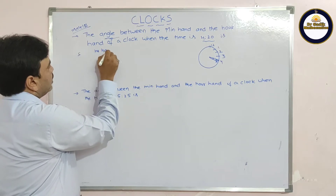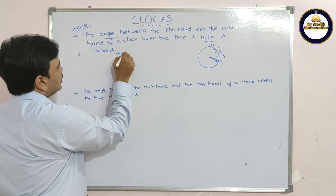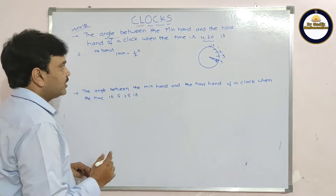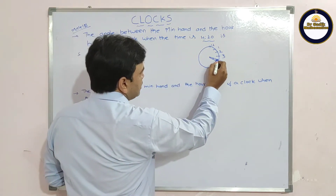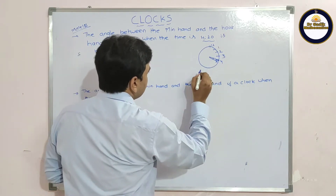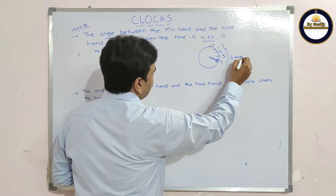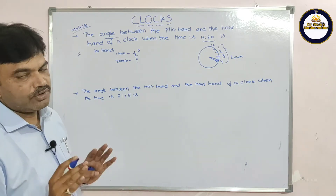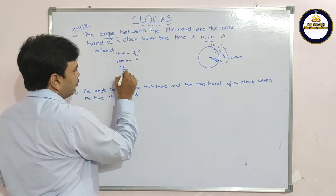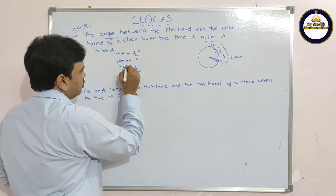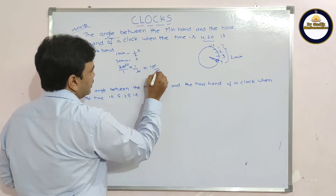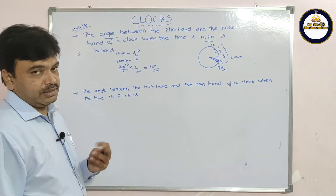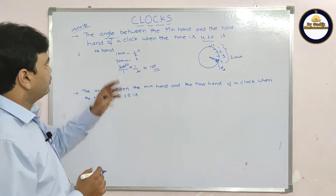The hour hand in one minute makes half a degree. The minute hand is at 4, which means 20 minutes. In how many degrees is 20 minutes? So 20 × (1/2) = 10 degrees. The angle is 10 degrees.